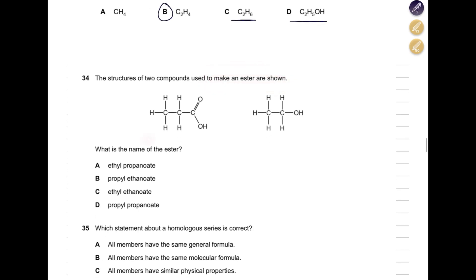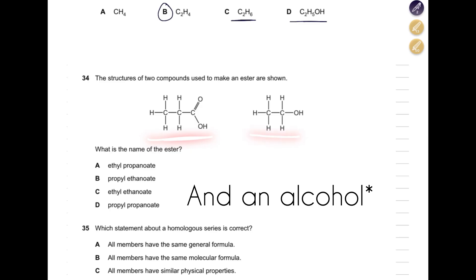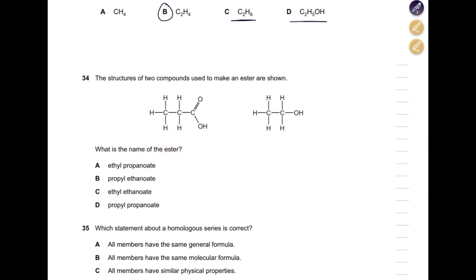Which structures of two compounds are used to make an ester? We have a carboxylic acid and an alcohol. When naming esters, the first part with the -yl suffix comes from the alcohol and the second part from the carboxylic acid. The alcohol has two carbons — so it is ethyl — giving either A or C. The carboxylic acid has three carbons — propanoic acid. The answer is ethyl propanoate.